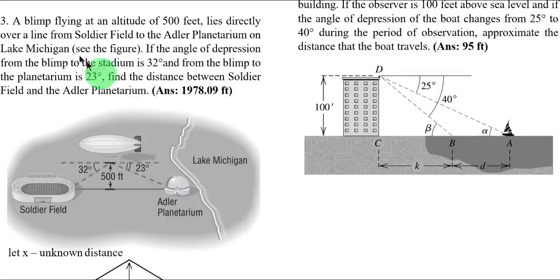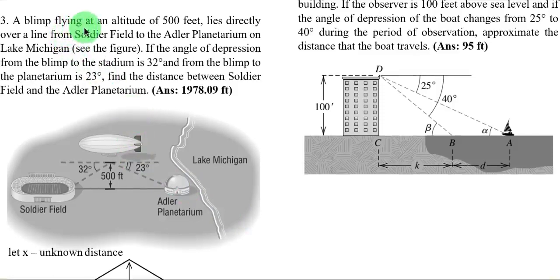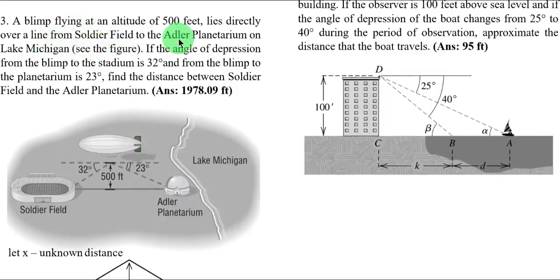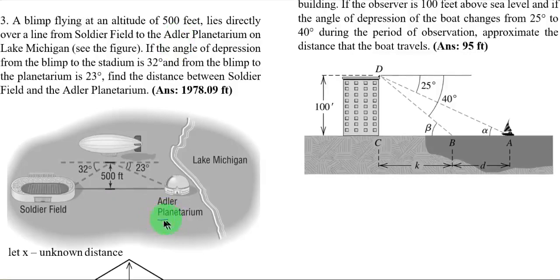Example number 3: a blimp flying at an altitude of 500 feet flies directly over a line from Soldier Field to the Adler Planetarium on Lake Michigan. So see figure. So this is the Adler Planetarium and Soldier Field.